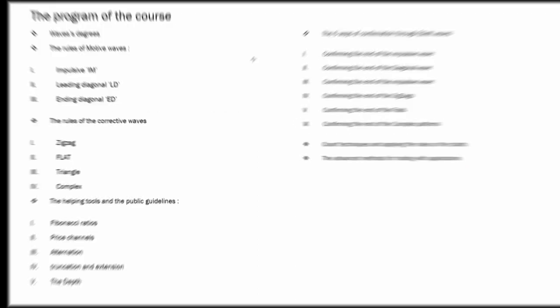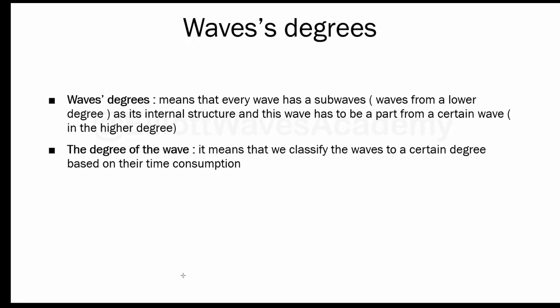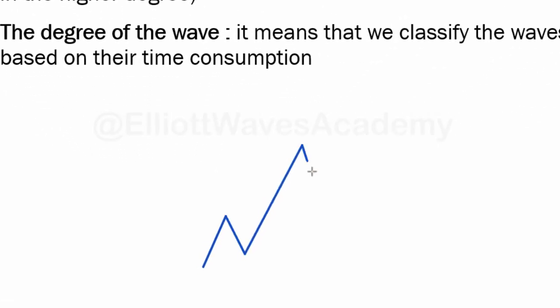So let's see the wave degrees. Wave degrees means that every wave has sub-waves—in other words, waves from a lower degree as its internal structure. This wave has to be part of a certain wave in the higher degree. For example, we have an impulsive wave like this. We can see that this wave includes five waves in the lower degree: 1, 2, 3, 4, and 5.